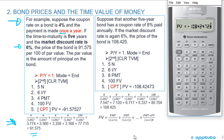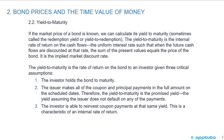By now, calculating the price of a bond should be fairly easy. Calculating the yield to maturity — where we know the price and are solving for I/Y — should also be fairly easy. If the market price of a bond is known, we can calculate its yield to maturity, sometimes called the redemption yield. The yield to maturity is the internal rate of return on the cash flows: the uniform interest rate such that when future cash flows are discounted at that rate, the sum of present values equals the price of the bond.